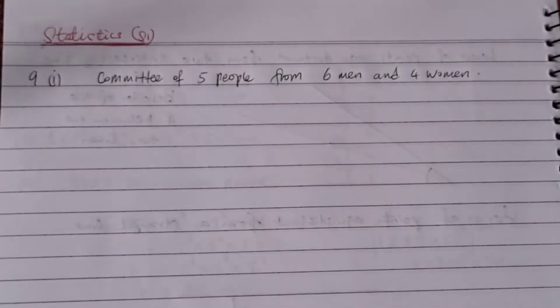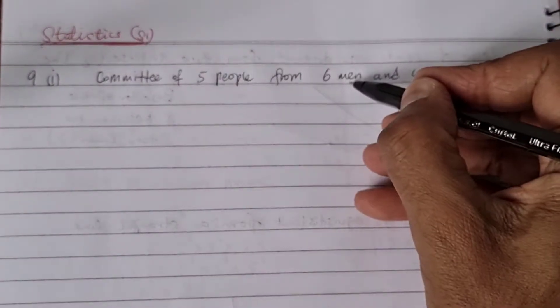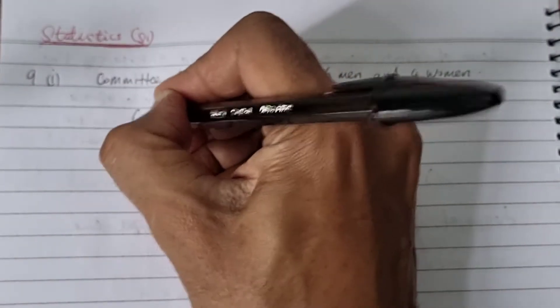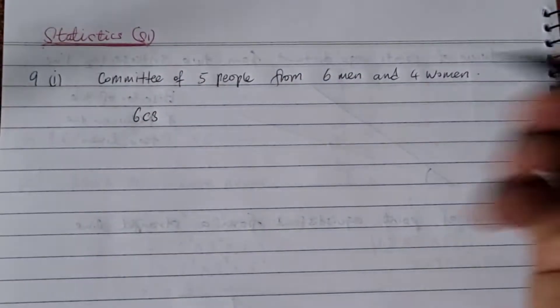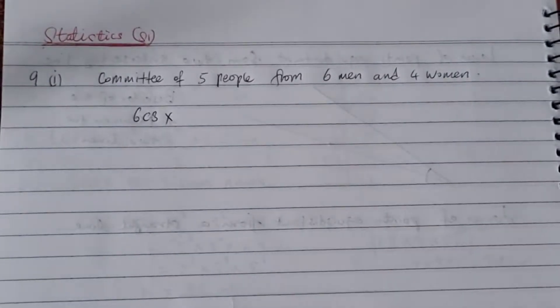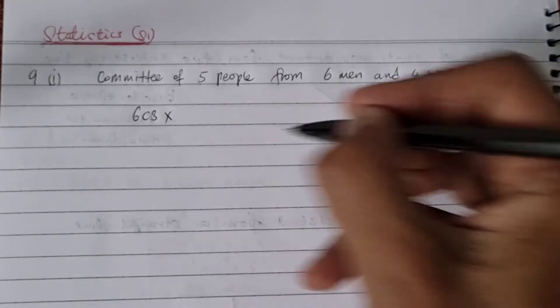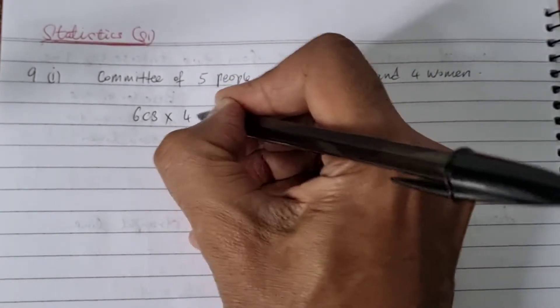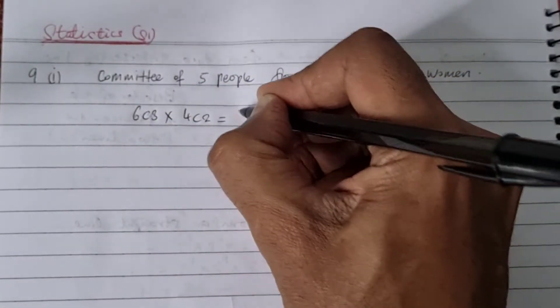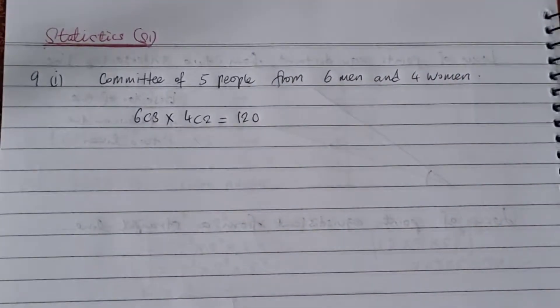Three men and two women. So three men from six men, that is six choose three, times two women from four women, four choose two. When we work this on the calculator, we should be able to get 120.